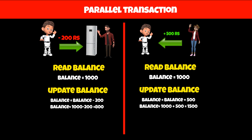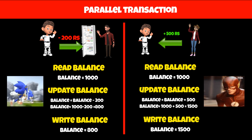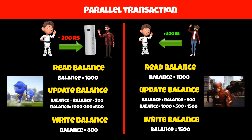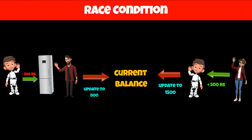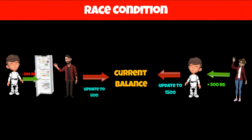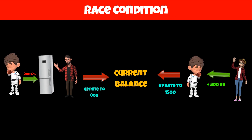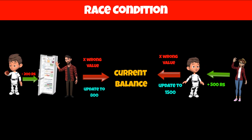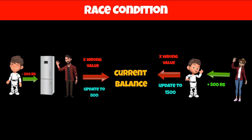The last step in updating is to write back the value to the database, so both transactions will race to update the value of the current balance variable to the database. This condition where two or more parallel transactions try to update the value of a variable at the same time is called a race condition, and this can lead to problems such as wrong value updates. Let me know in the comments if you want to know about how to avoid race condition in SQL. Follow my channel for more such videos.